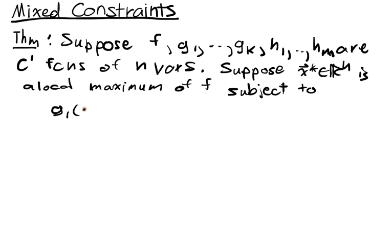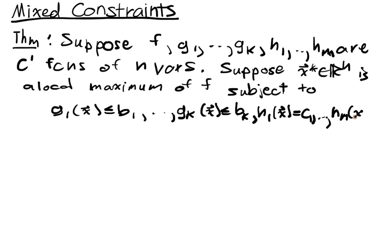G1 of X is less than or equal to B1, GK of X is less than or equal to BK. H1 of X equals C1, these are the equality constraints. HM of X equals CM.